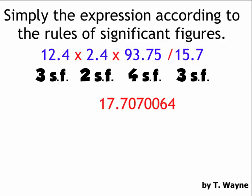15.5 is three sig figs. So two sig figs, that's the least number of sig figs. That would be my worst measurement, since all these numbers come from measurements. So I'm going to round my answer to two sig figs. So 17.707064 to two sig figs becomes 18. According to the rules of significant figures, the answer is 18.